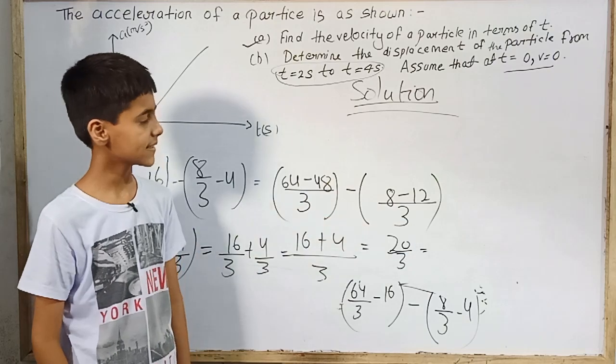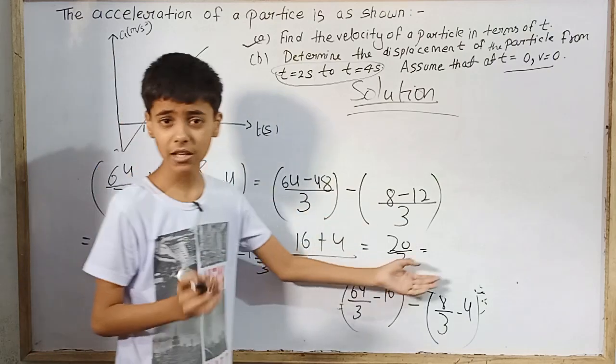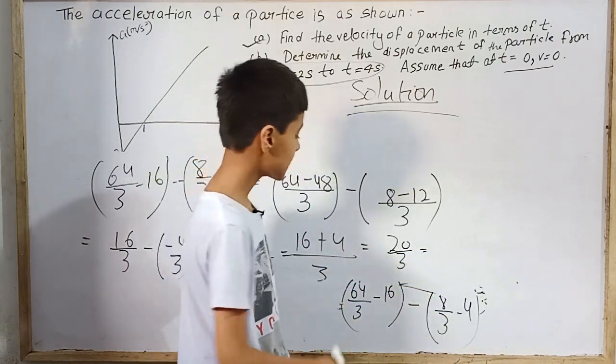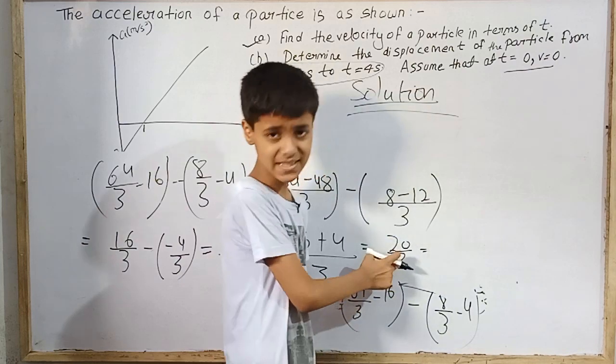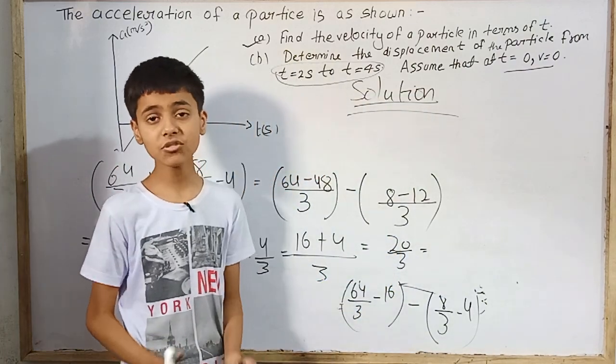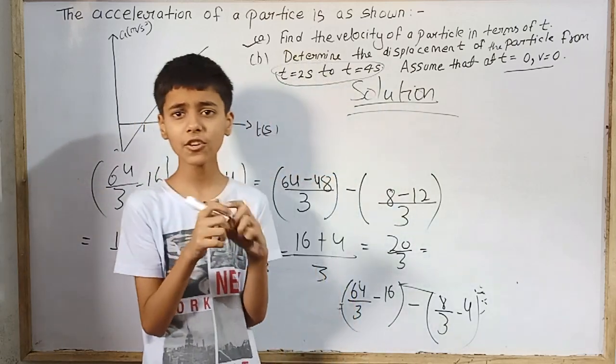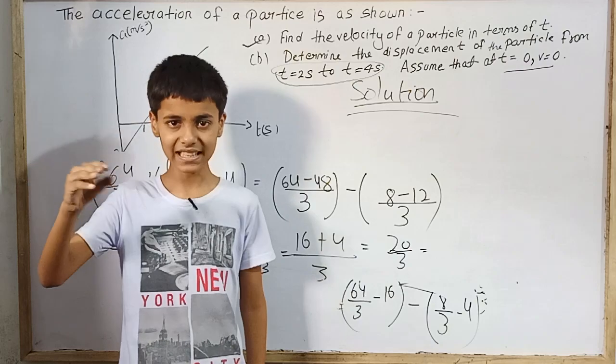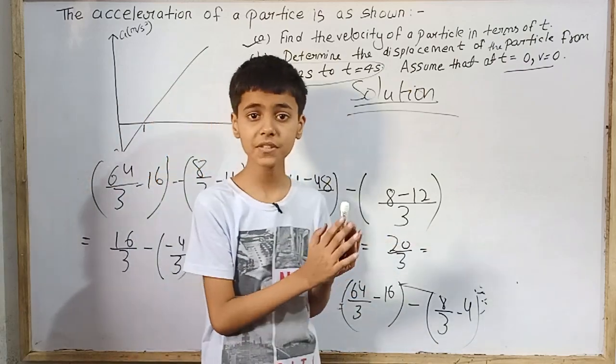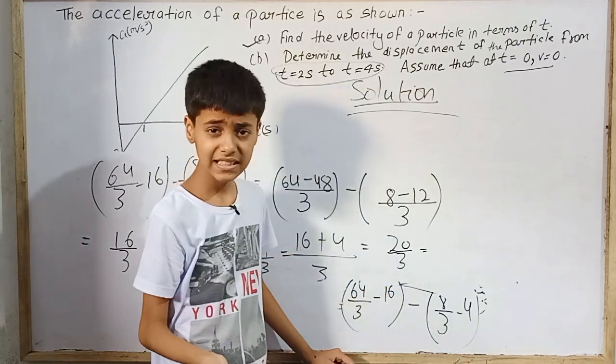Minus into minus is always a positive number. So this is 16 by 3 plus 4 by 3. 3 and 3 are common. 16 plus 4 is 20. So this is 20 by 3. If we want to get it in forms of decimals, 20 by 3 is difficult because it will be a repeating decimal expansion.